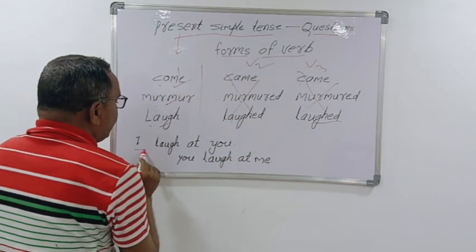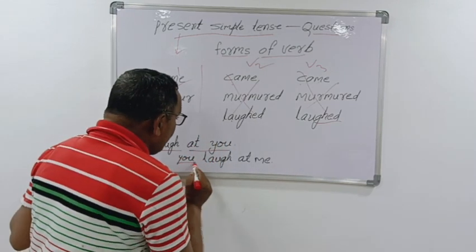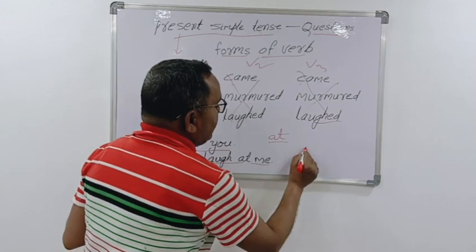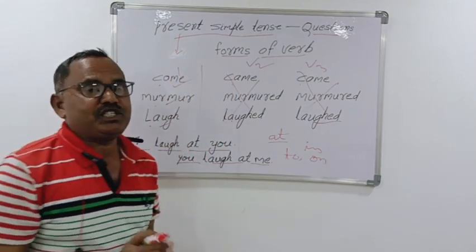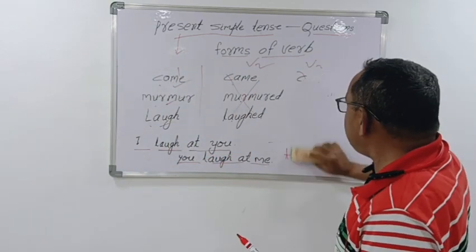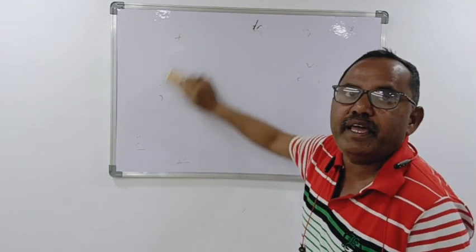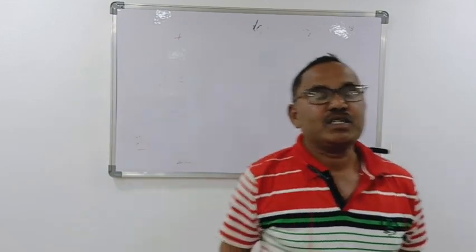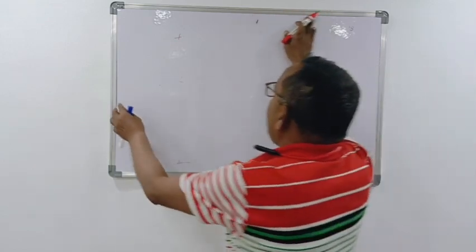Now see here: I laugh at you. You laugh at me. At is a preposition. Yet is a preposition. In, to, on - these are the prepositions. Now for negative sentences, we do not come to school. We do not go to market. We do not drink water. We do not murmur in class. You do not laugh at me. Like this we have made the last five negative sentences.